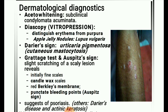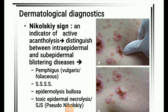Next image: Dermatological diagnostics. Aceto-whitening for subclinical condylomata acuminata; diascopy (vitropression) to distinguish erythema from purpura; apple jelly nodules in lupus vulgaris; Darier's sign in urticaria pigmentosa and cutaneous mastocytosis. Grattage test and Auspitz sign: slightly scratching scaly lesions reveals initially fine scales, then candle wax scales, red Bulkley's membrane, and punctate bleeding points — the Auspitz sign, suggesting psoriasis, Darier's disease, or actinic keratosis.